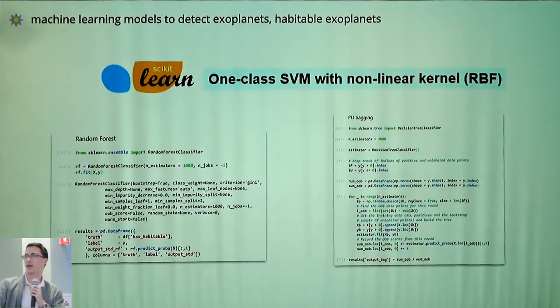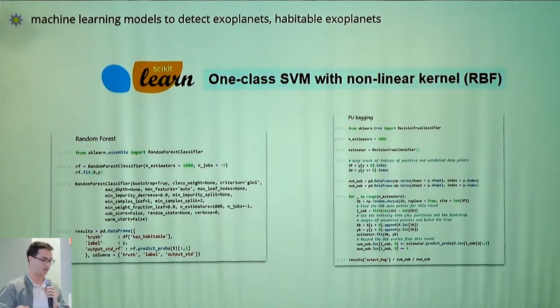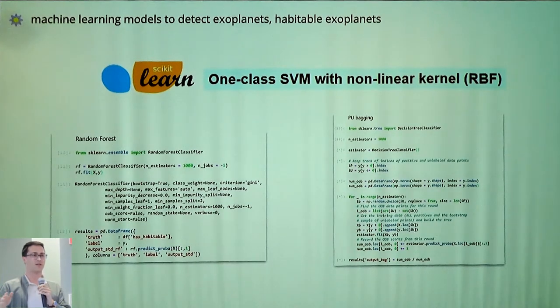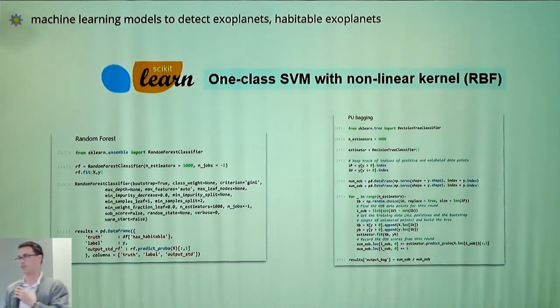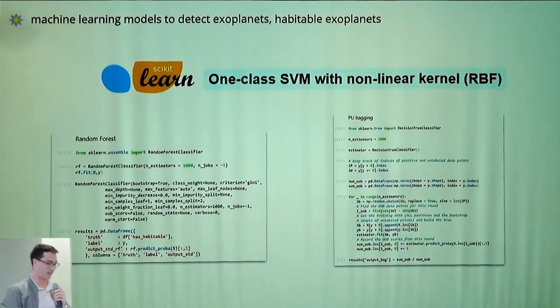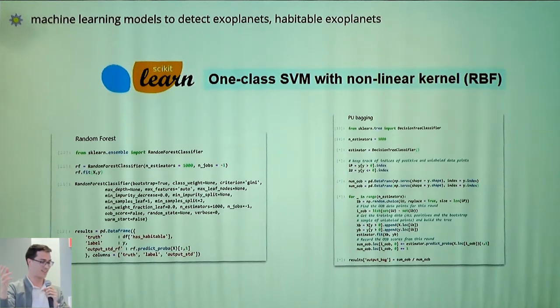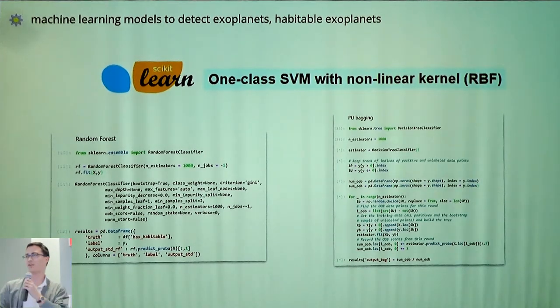What I found during—I tried one-class SVM, a couple of different implementations of random forest, and then this cool thing called PU bagging, which is you have positive and unlabeled examples, and you do some stuff, and then eventually you try to get a predictor that predicts whether it has an exoplanet or a habitable planet.